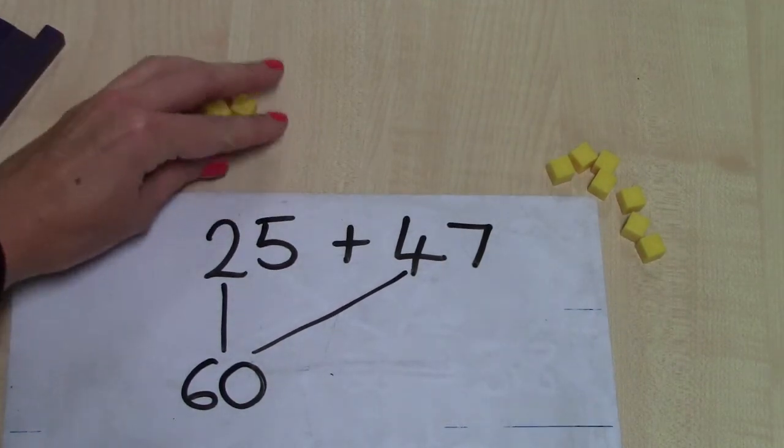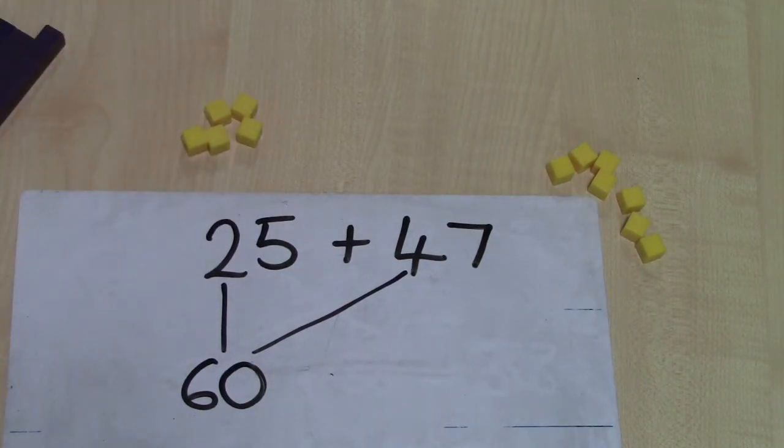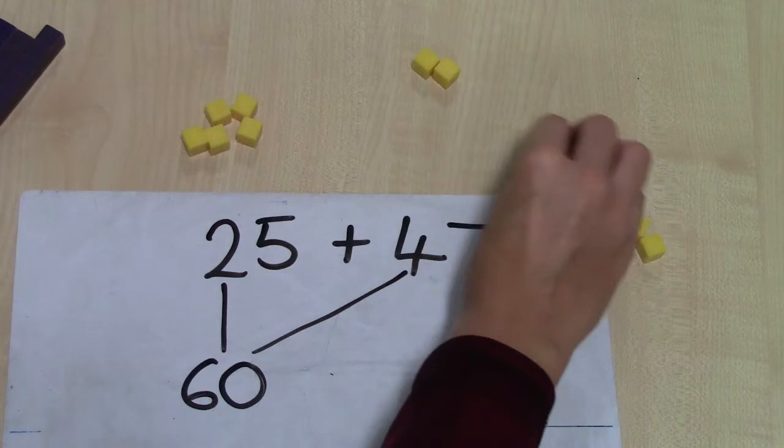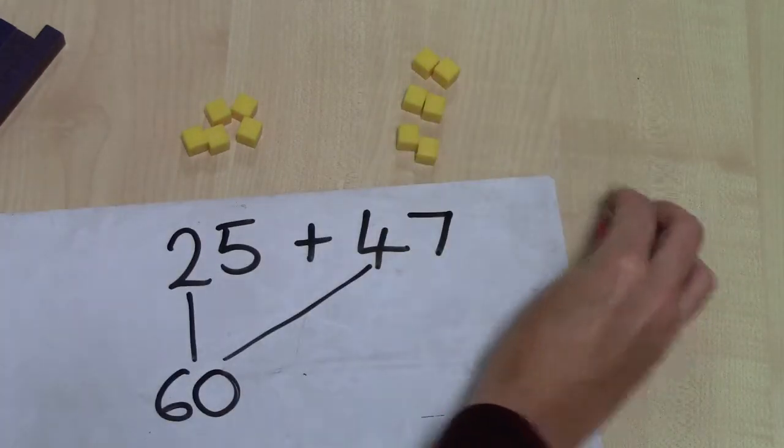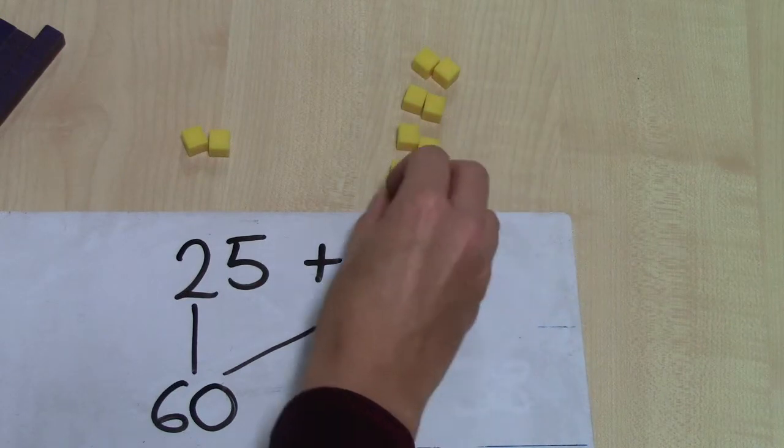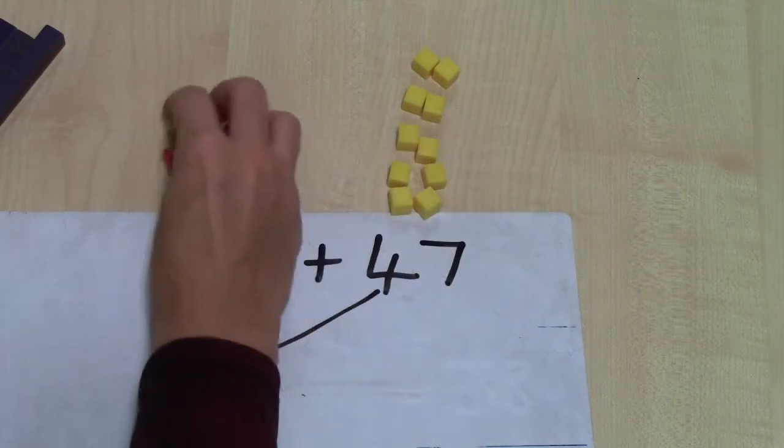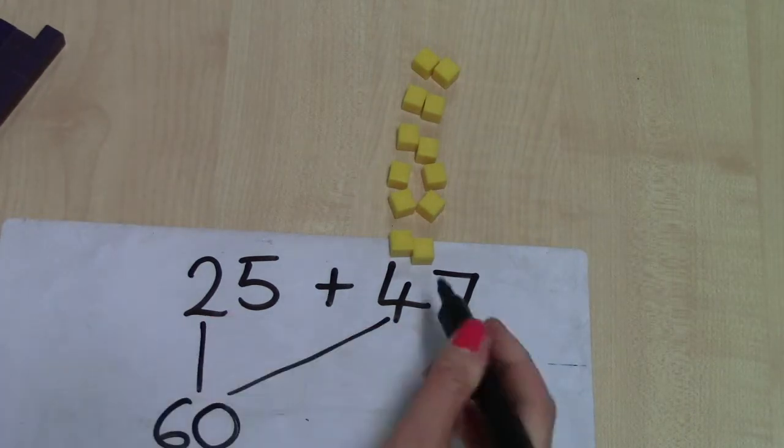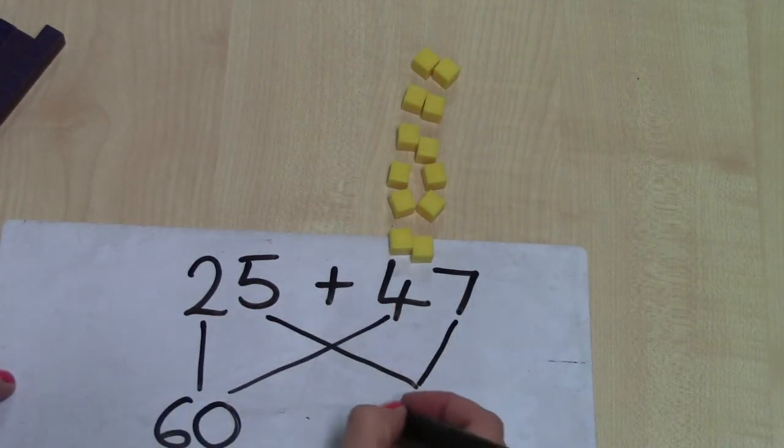And I've got seven units and five units. I think I'm going to start with seven as it's the largest number. So two, four, six, seven. And now I know if I add three units to this, I get 10, and I've got another two. So I've got 12. Seven add five is 12.